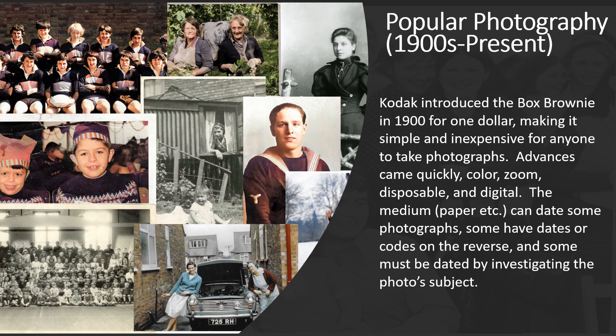When the Box Brownie was introduced for a dollar in 1900 in the US, it began the modern photographic era. From that day onwards, most people could take their own photographs without relying on an expert studio. This is probably the period where the bulk of your family photographs will come from. In the last 120 years, photography has transitioned from black and white to color, and from film to digital. Each advancement enables different dating techniques based on the type of photograph, paper, and medium used. Many photographs will have a developer's date code or a studio copyright on the reverse.